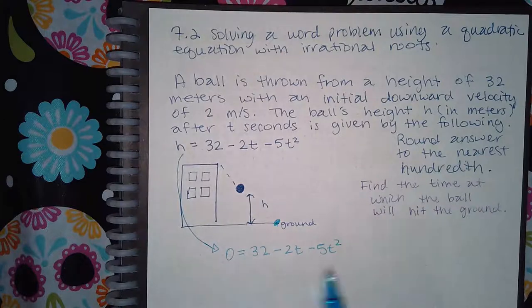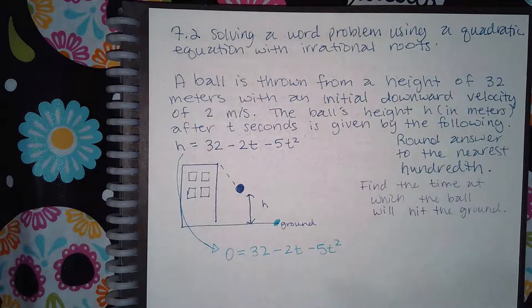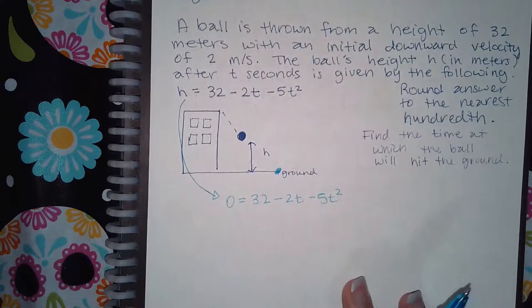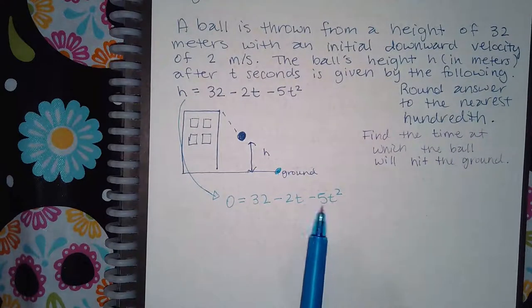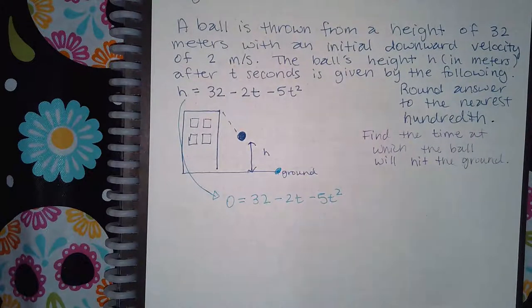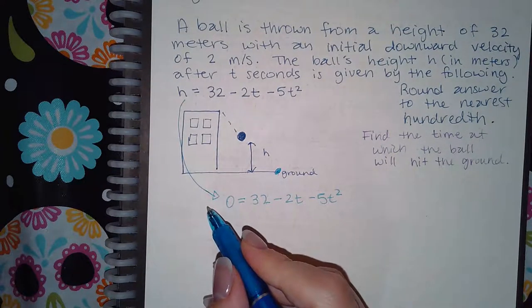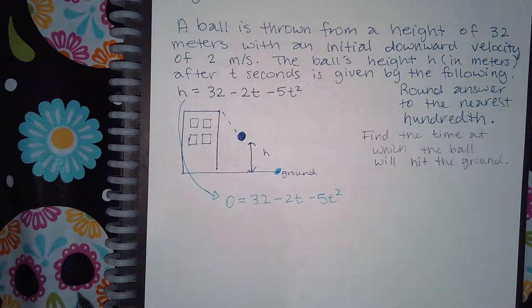Now it is equal to 0, and I could use the quadratic formula right away, but I do not like to use the quadratic formula when my squared term is negative. So I would be moving every single one of these terms over to the other side, and as I do that, they all change signs.